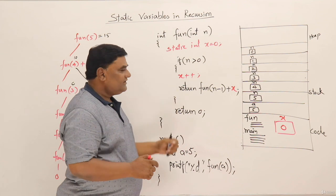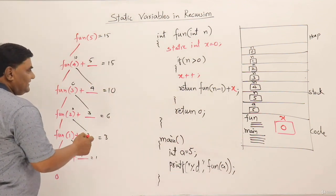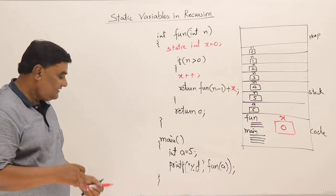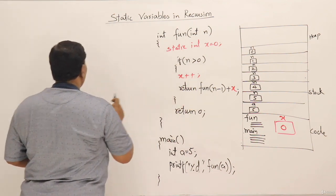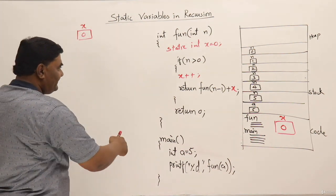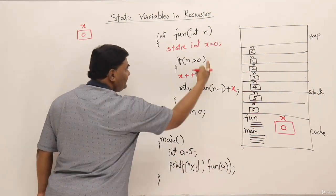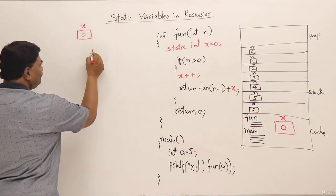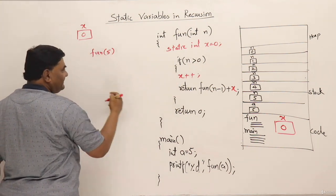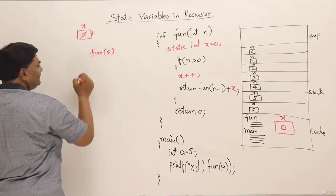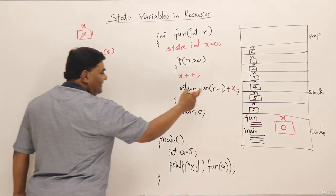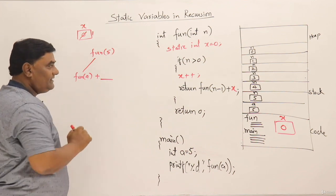Now what will be the result of this modified function? I will trace it again, keeping x as a single separate copy outside the tracing tree. First call: fun(5), n=5, 5 > 0, so x++ makes x=1. Then call fun(4), and x will be added at returning time. For fun(4): x++ makes x=2, call fun(3) plus x at returning time.